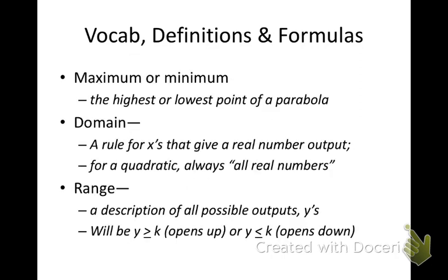We're just going to review these definitions from our last concept. A maximum or minimum is the highest or lowest point on a parabola. The domain is the rule for the x's that give real number outputs, and for a quadratic it's always all real numbers. The range is a description of all the possible y values — it will be y greater than or equal to k if the parabola opens up, or y less than or equal to k if it opens down.